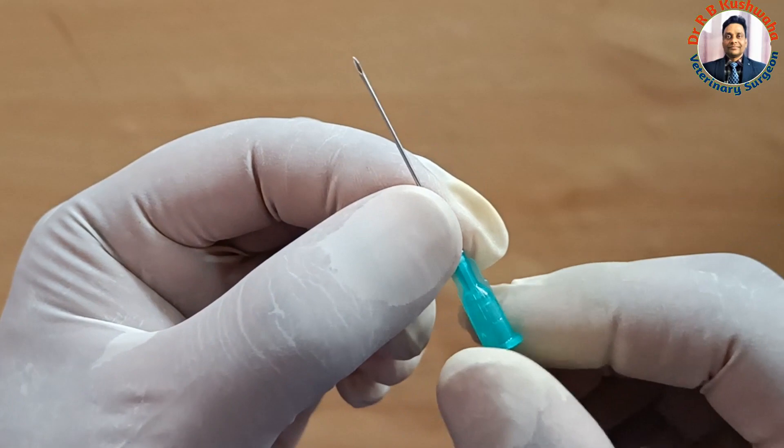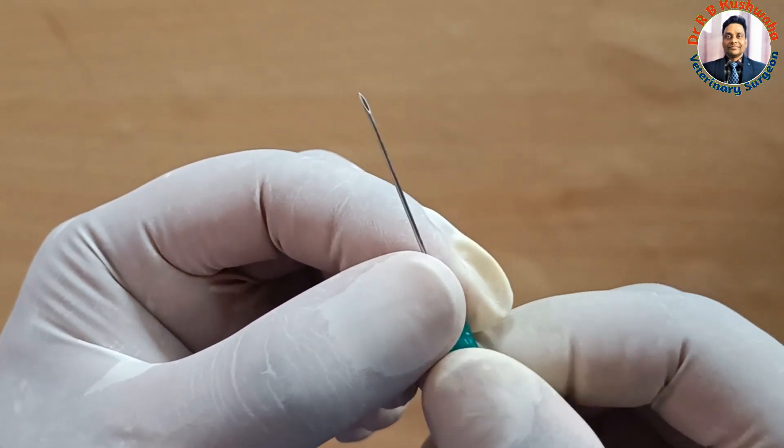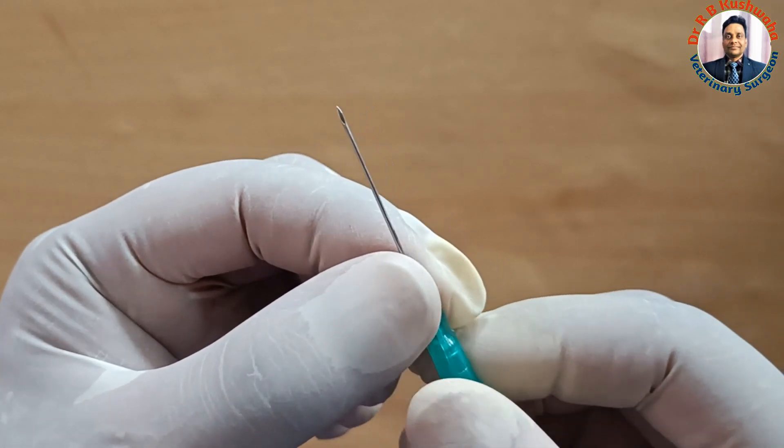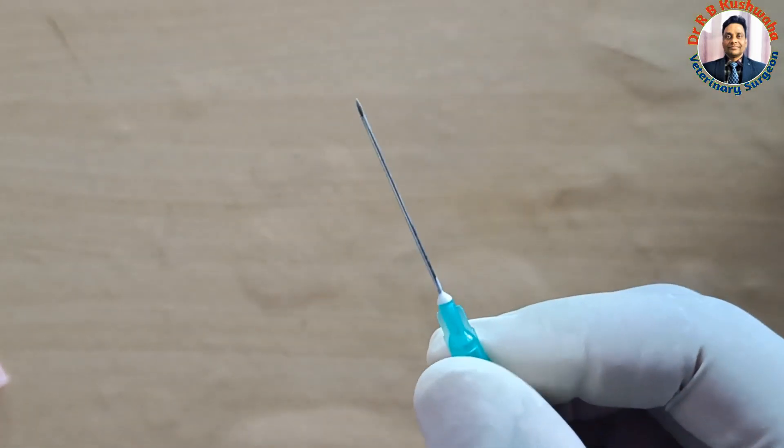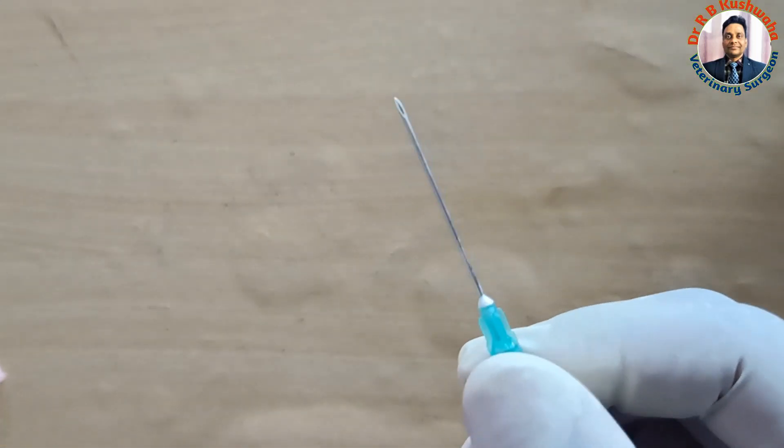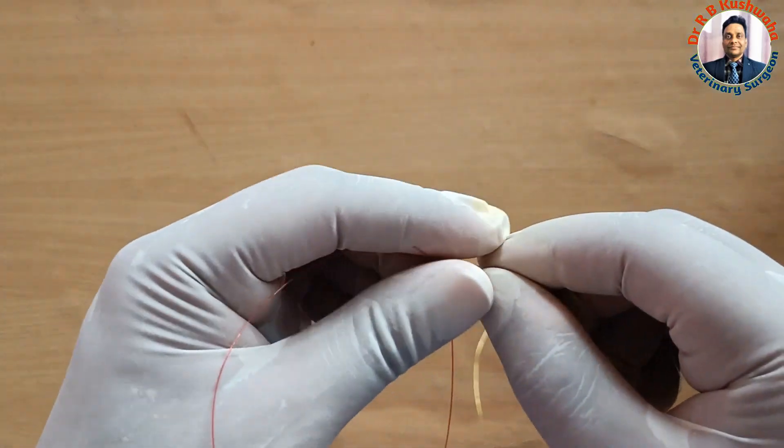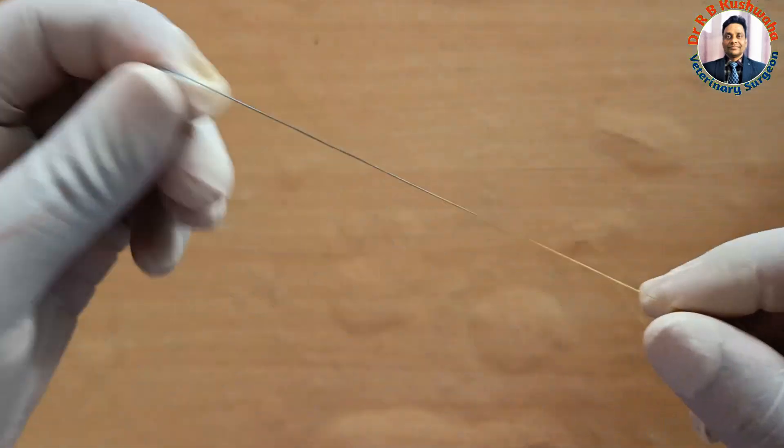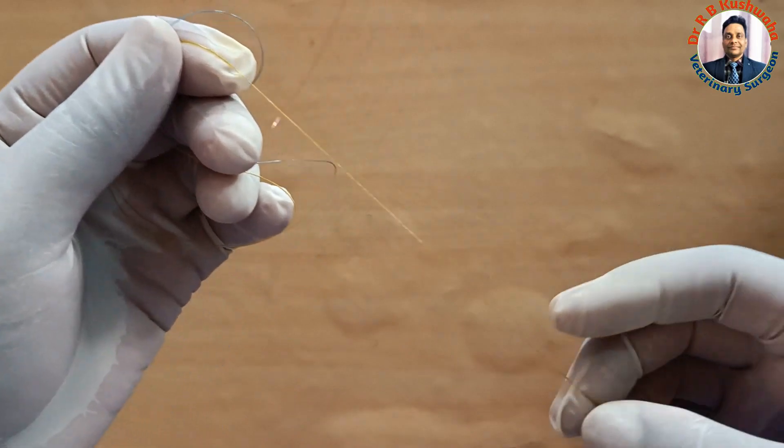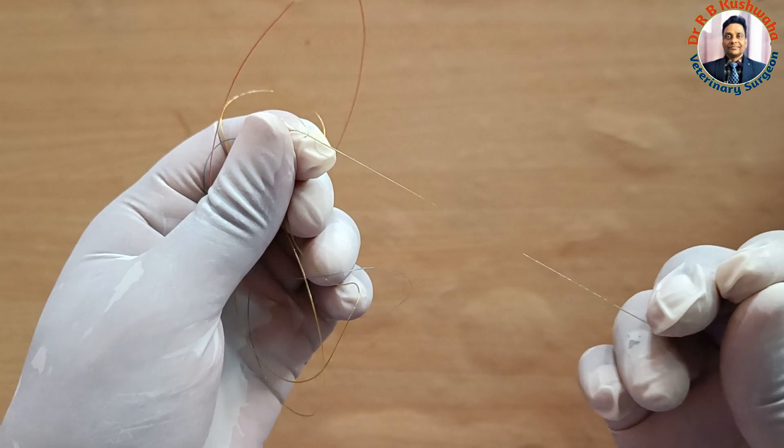Whereas this 21 gauge hypodermic needle we use for the suturing of the equine skin or for the small animal, particularly dogs. For dogs you can also use the 23 or 22 gauge. As per the size of the hypodermic needle you choose the different diameter of nylon thread.